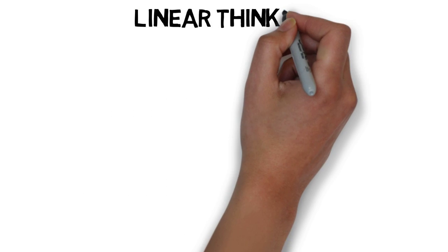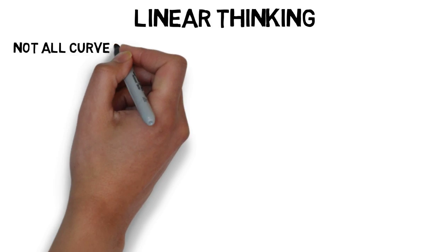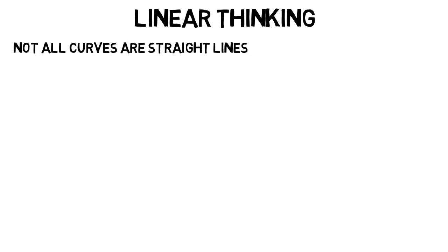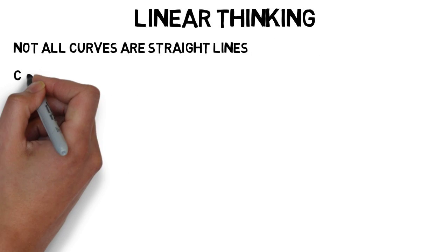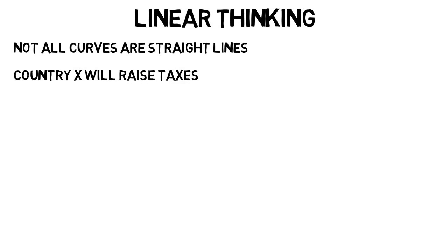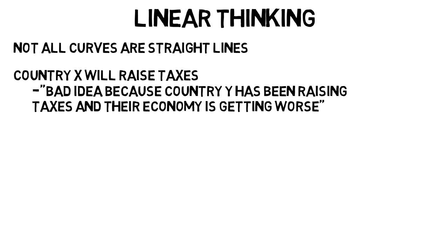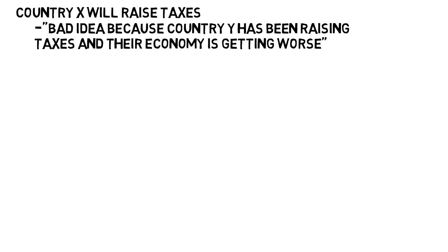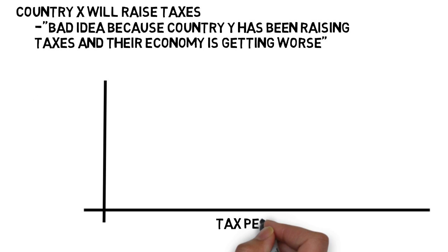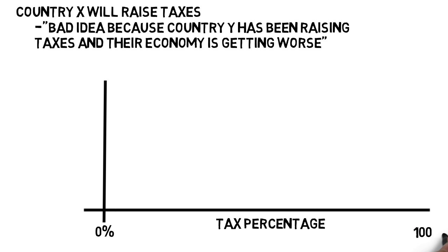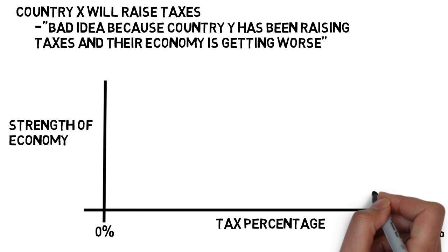One simple thing people do a lot is linear thinking. Anyone could agree that not all curves are straight lines, although people think the opposite a lot. Like, let's say country X is about to raise taxes, and people say that's a bad idea because some other country, country Y, has been raising taxes and their economy is getting worse. Thinking that simply is linear thinking — it's assuming if you graphed tax percentage from 0 to 100 versus the strength of the economy, it would be a straight line.